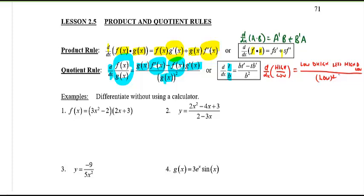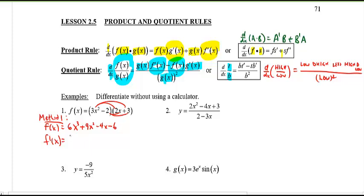Let's differentiate these without a calculator. For the first question, you could just multiply it out — that's Method 1. Expanding gives 6x³ + 9x² − 4x − 6, a polynomial. Taking the derivative term by term gives 18x² + 18x − 4. You could skip the product rule here, but let's practice it anyway.